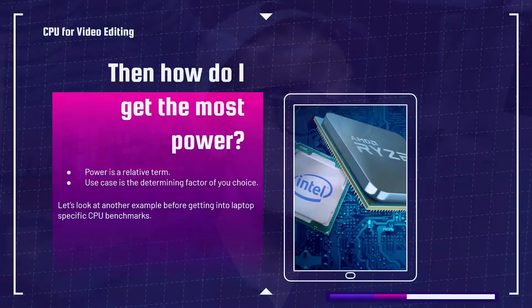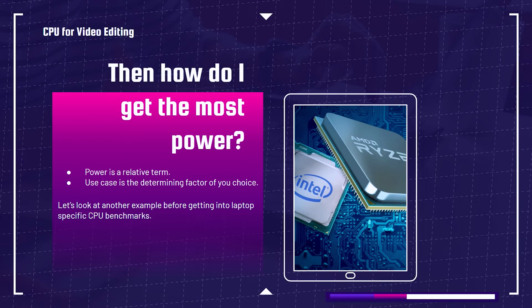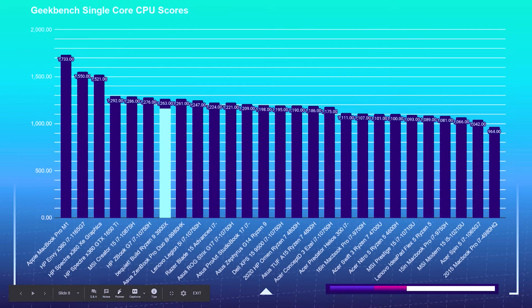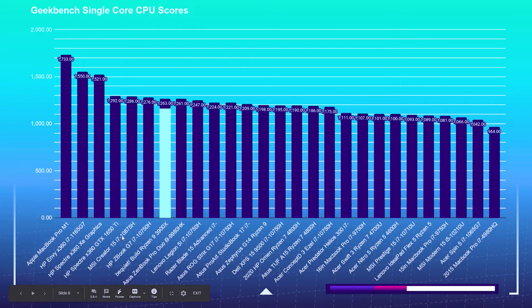On the single core performance chart, my same Ryzen 9 3900X with 12 cores and 24 threads gets crushed by the i7-10875H — and even by a GTX 1650 Ti paired with an i7-10750. You can see that single core performance is not related to how many cores you have, and that should be obvious but it often gets overlooked with all the marketing jargon.